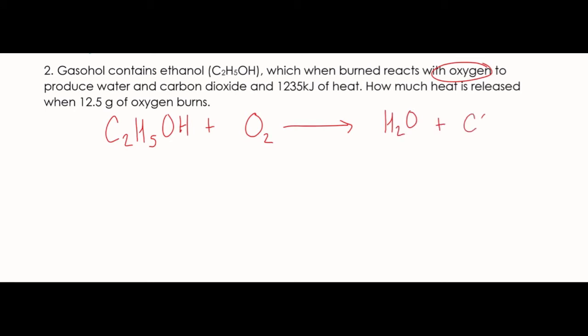And then that makes water and carbon dioxide. And then the heat there, 1235 kilojoules. It is a product, so it's going to be negative. So we do have to balance this. This is a CHO type of problem. We have to do carbons first, then hydrogens, then oxygens. So there's 2 carbons and then 6 oxygens.